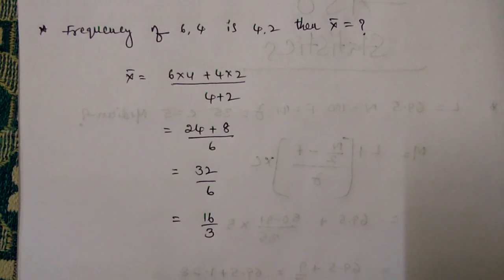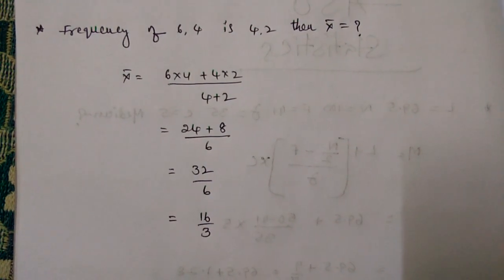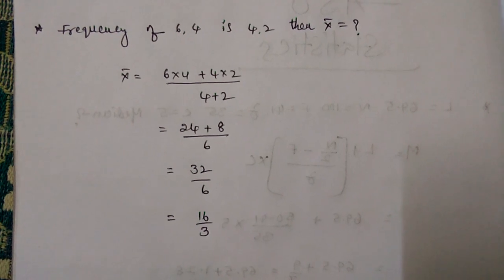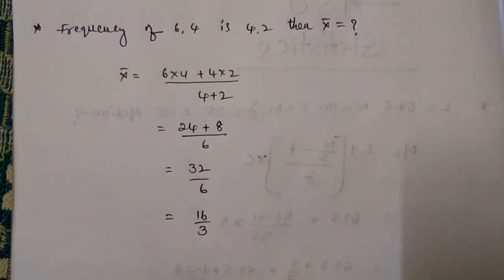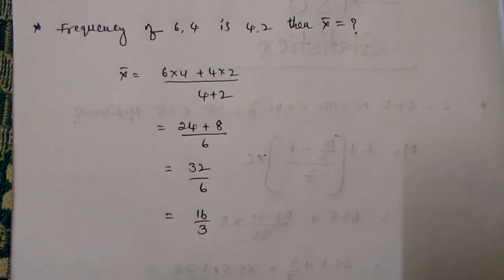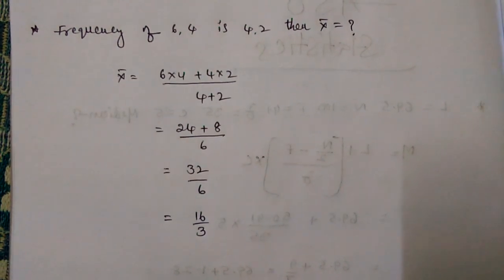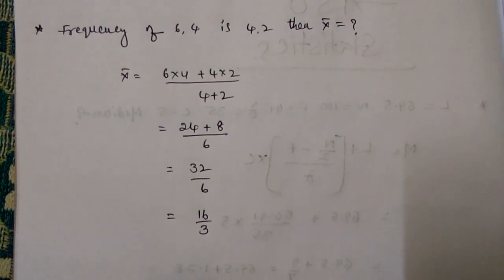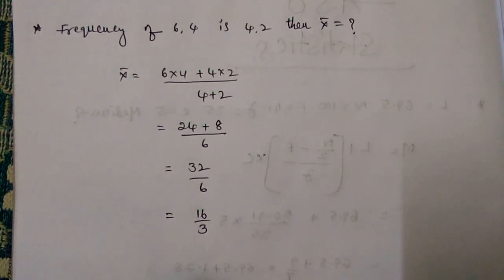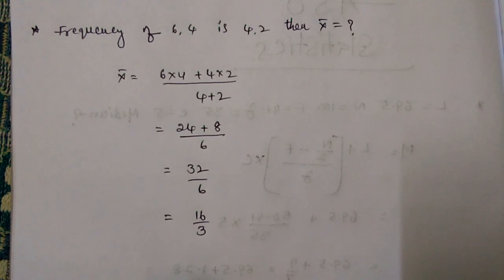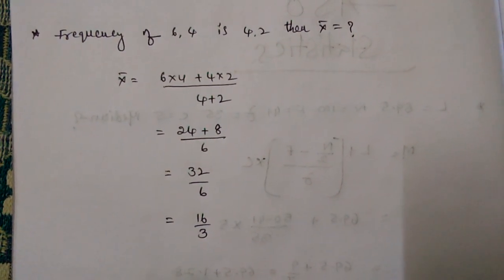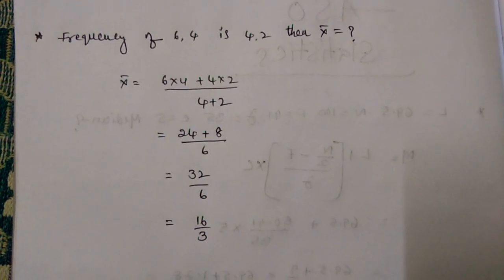First two digits are multiplied and second two digits are multiplied, added with first two digits, then divided by the sum of frequencies. So that equals 24 plus 8 by 6, then 32 by 6, then 16 by 3 is the x bar. All the best.